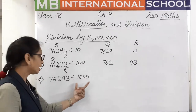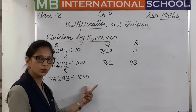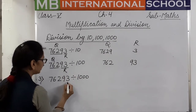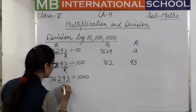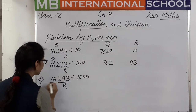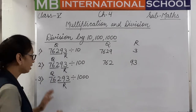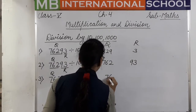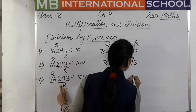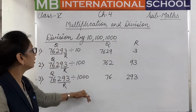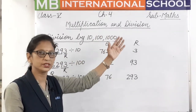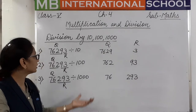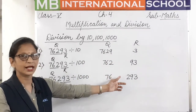Next, if the same number is divided by 1000 — 1000 has three zeros, so we take the last three digits as the remainder and the rest as the quotient. So the quotient is 76 and the remainder is 293. So whenever we do division by 10, 100, 1000, or 10,000, we don't need to use the long division method — we can directly find the quotient and remainder.